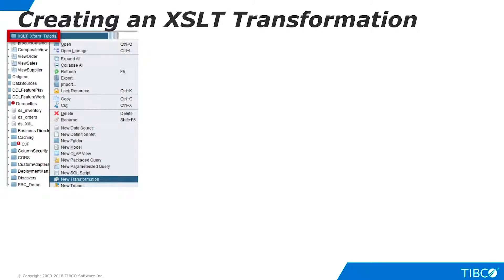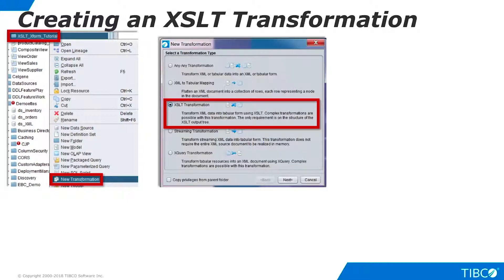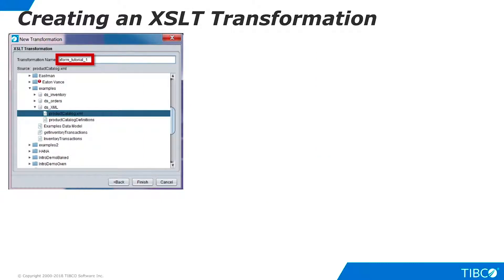Let's create an XSLT transformation to flatten the XML product description document. In Studio, make a folder to hold your work. Right-click the folder and select New Transformation. Studio supports several different kinds of transformation editors. Select XSLT Transformation and click Next. Give the transformation a name. Now navigate to the Examples folder that is part of the standard Studio installation. Expand the DS XML data source and select the Product Catalog XML resource. Click Finish.